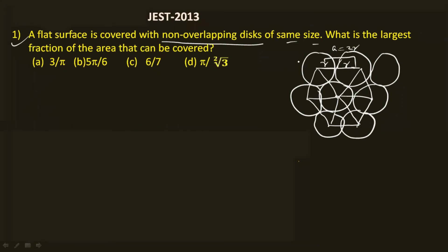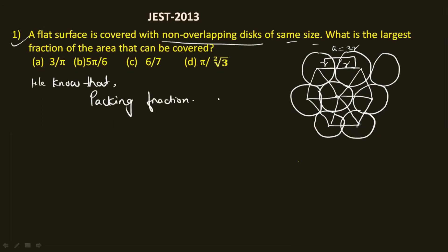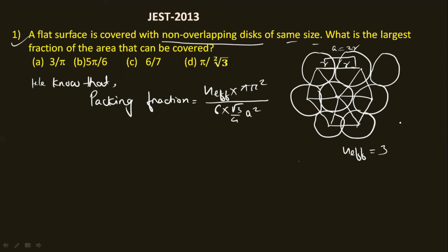Now in this case you will have to calculate the packing fraction, because the packing fraction gives you the largest fraction of area. The packing fraction equals n_effective times the area of the disk (π r²) divided by the area of the hexagon, which is 6 times the area of an equilateral triangle: (√3/4) a². Here a = 2r.